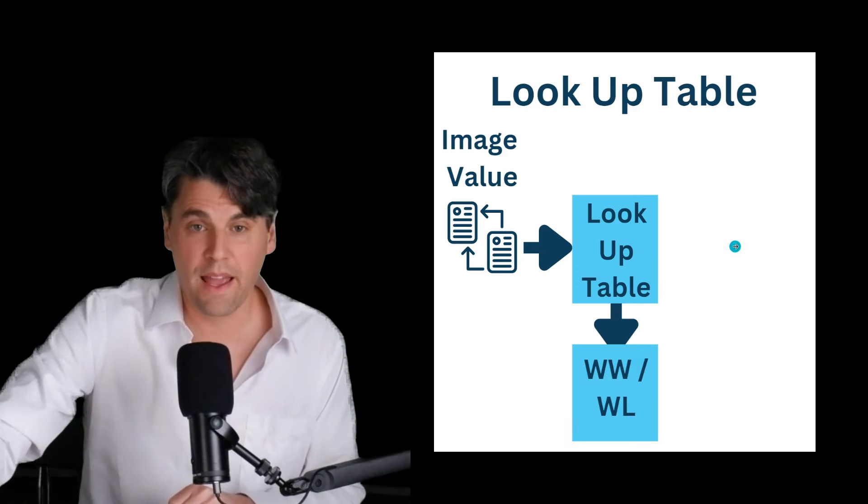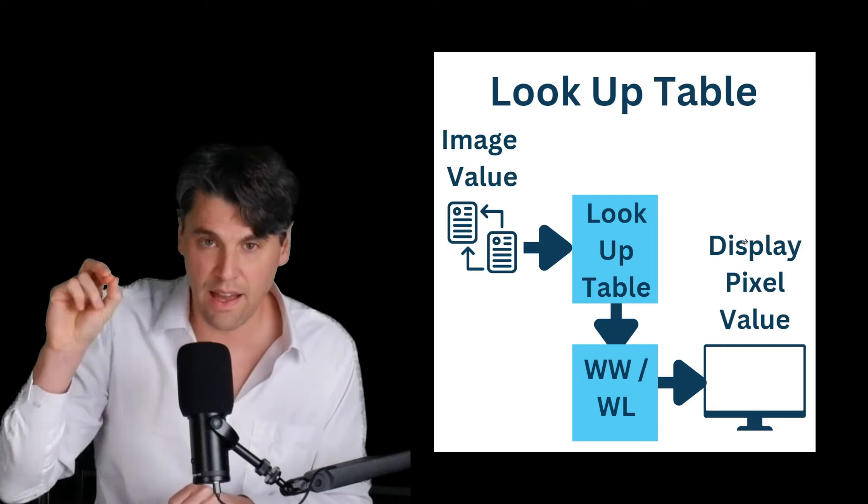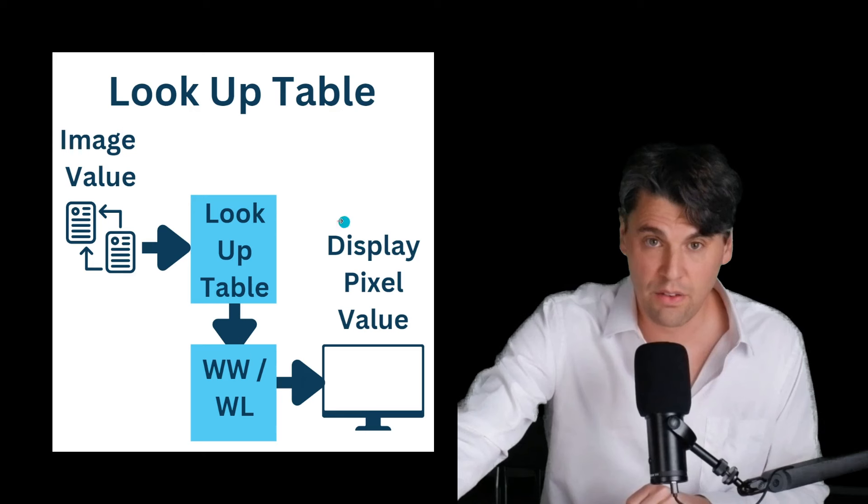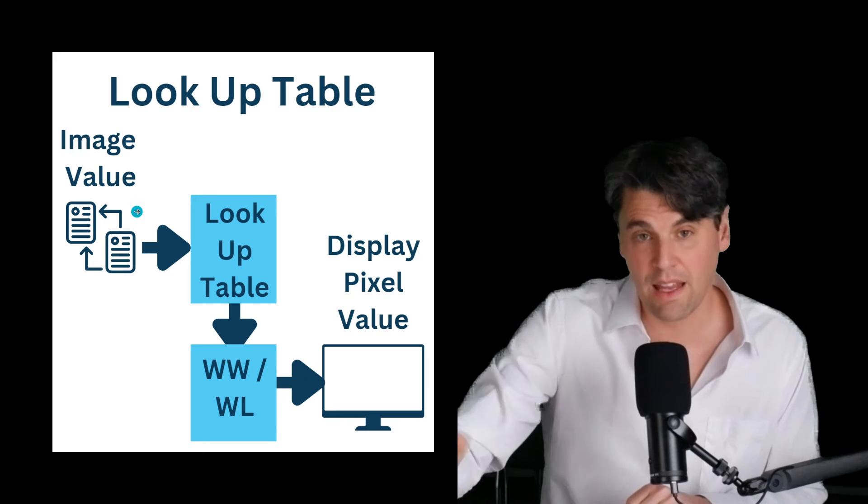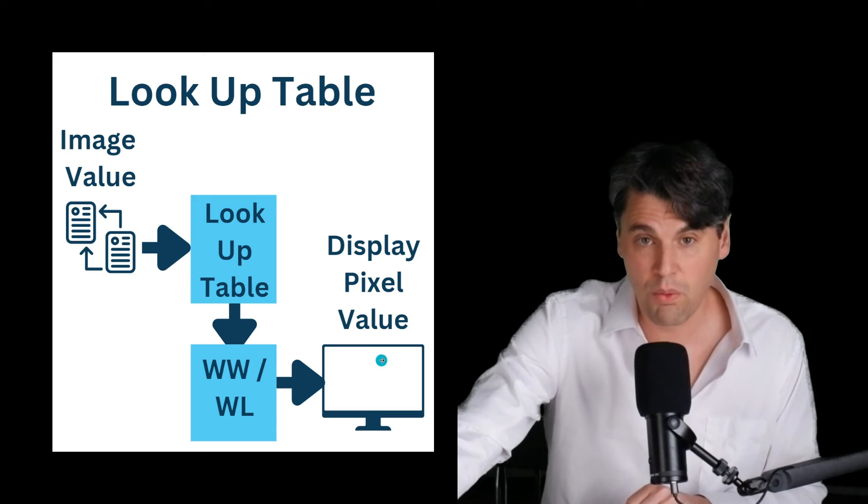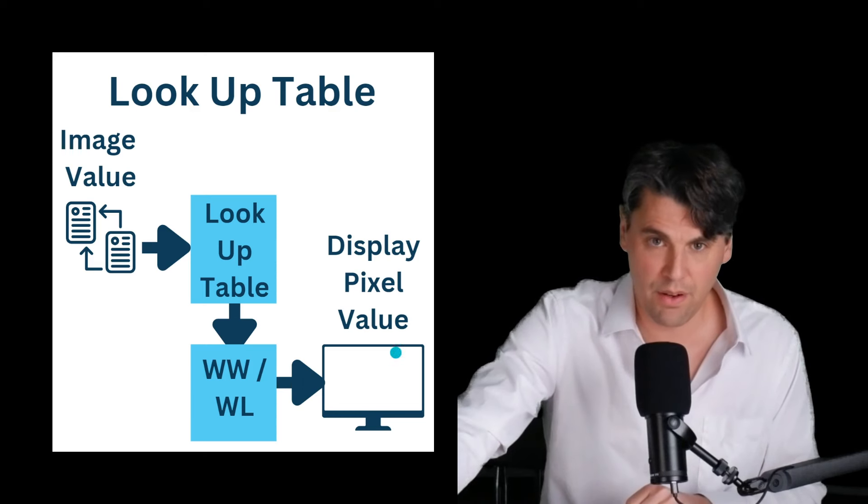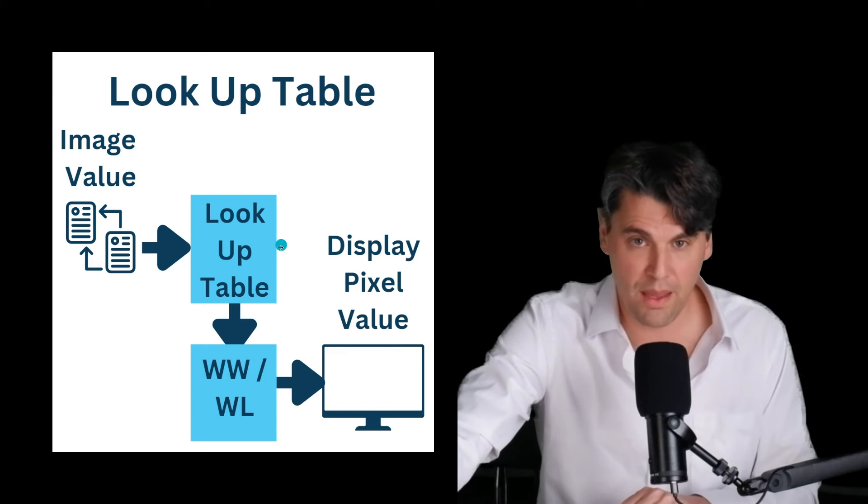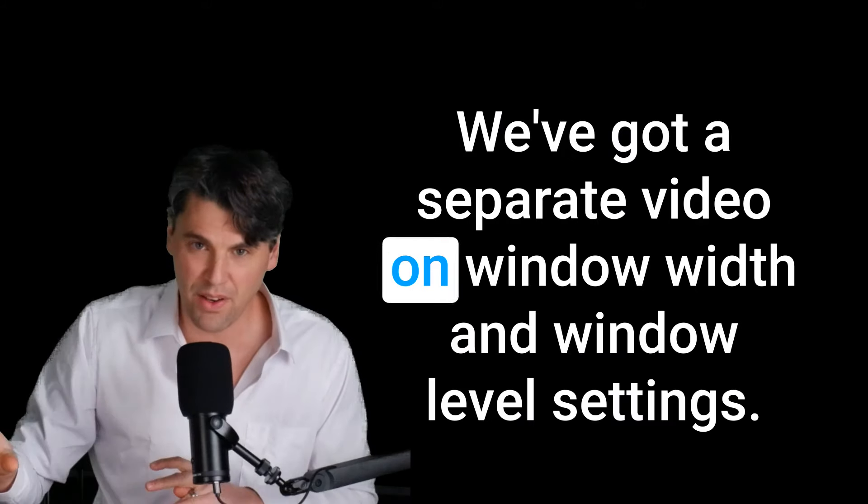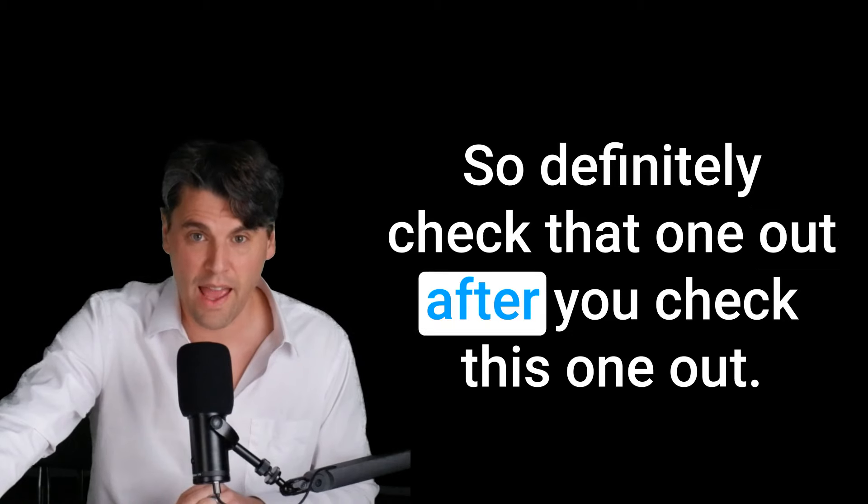Then we're going to apply a window level setting second. Then we're going to actually have a conversion to the display pixel values that you're actually seeing. So we get from here where we have an input value for each pixel out to here where we have the display pixel values. And we need these two mappings in order to get there. So our lookup table and then our window width and window level settings. We've got a separate video on window width and window level settings. So definitely check that one out after you check this one out.